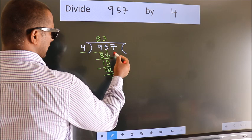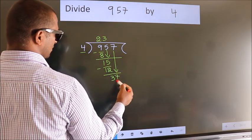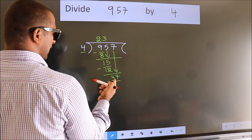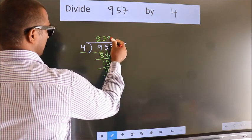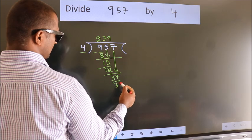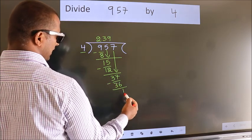After this, bring down the beside number. So, 7 down. So, 37. A number close to 37 in the 4 table is 4 ninths, 36. Now, we subtract. We get 1.